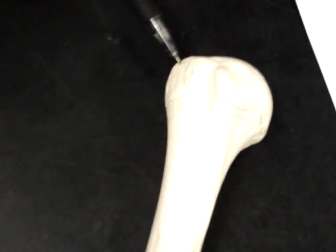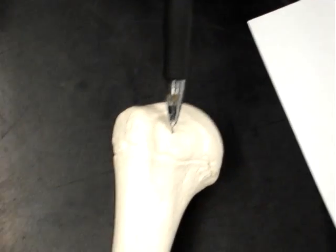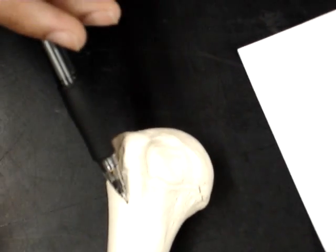Laterally we have the greater tubercle. So it's lateral to the head. And then anteriorly we have the lesser tubercle. In between that we have the intertubercular groove.